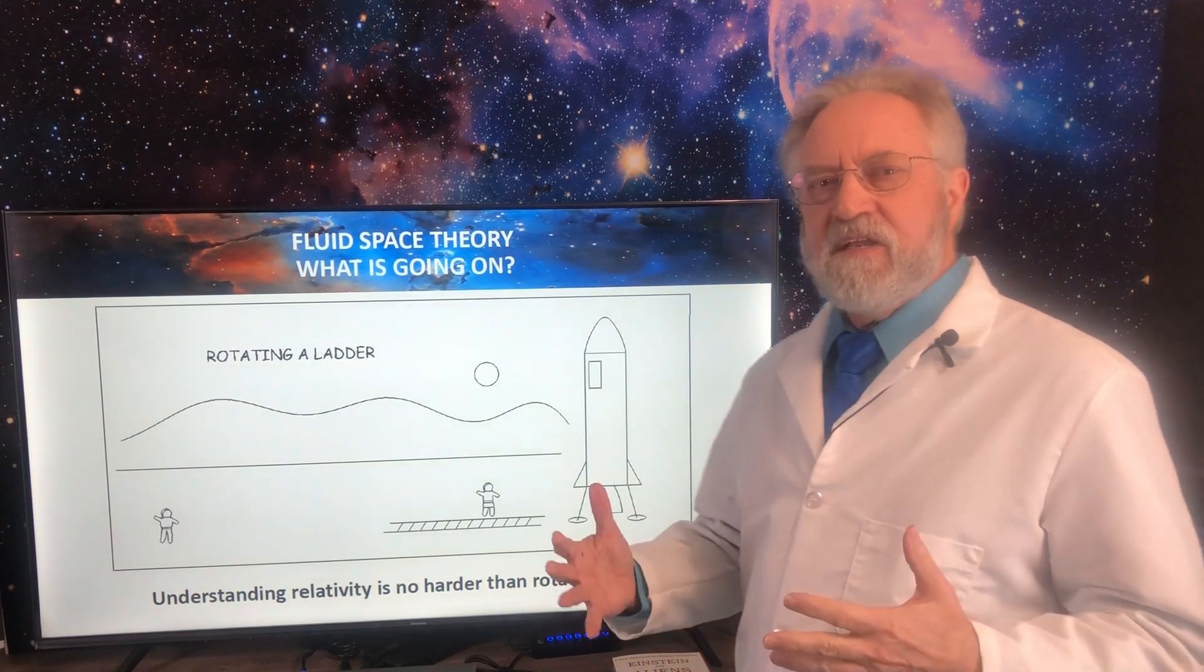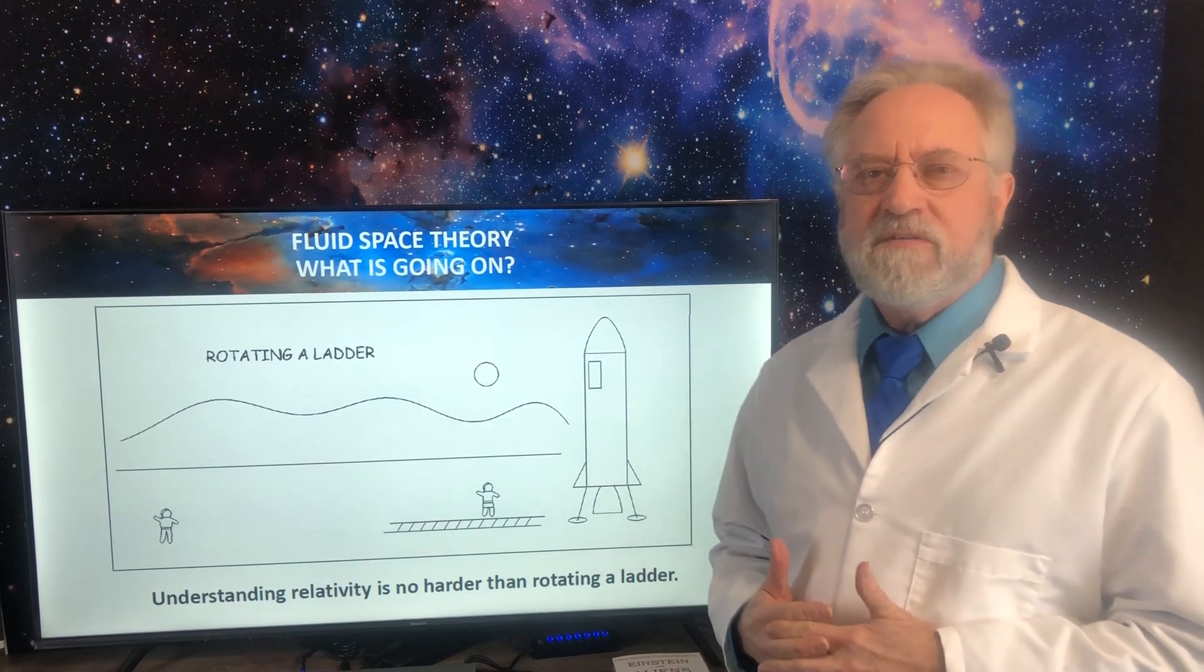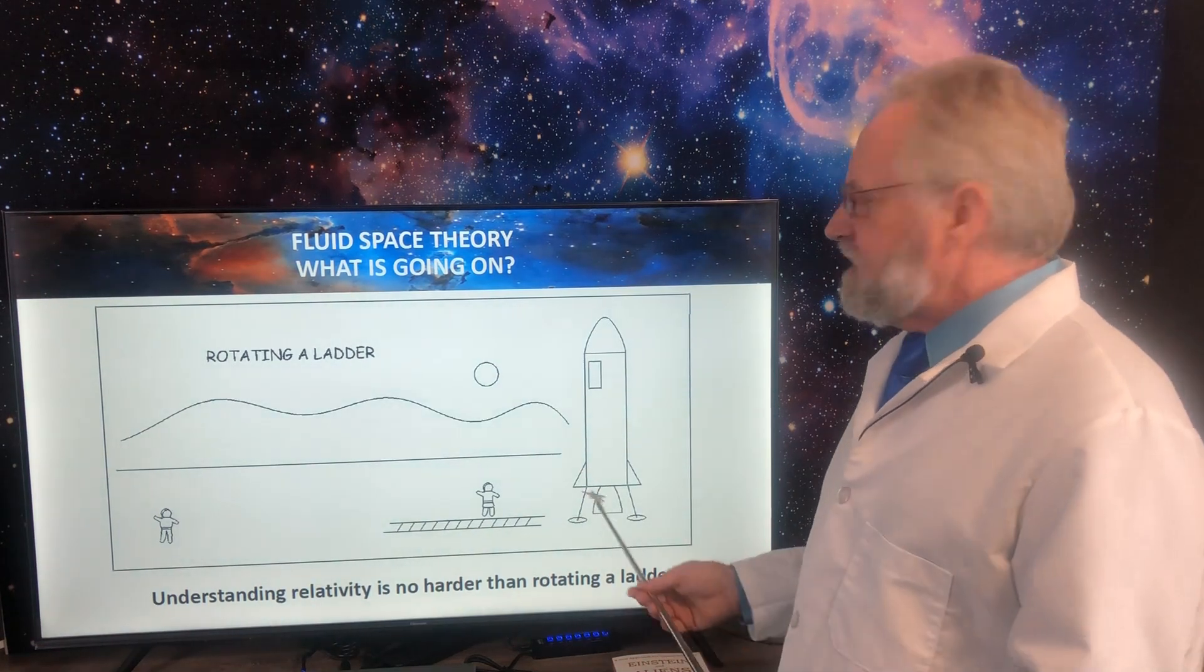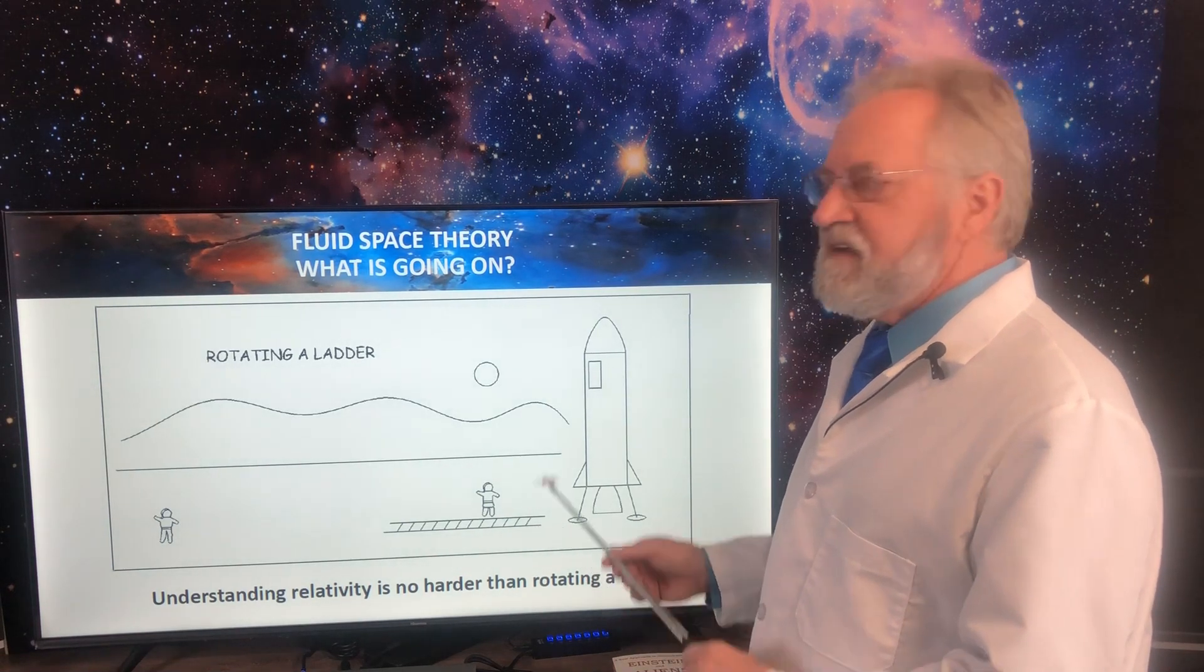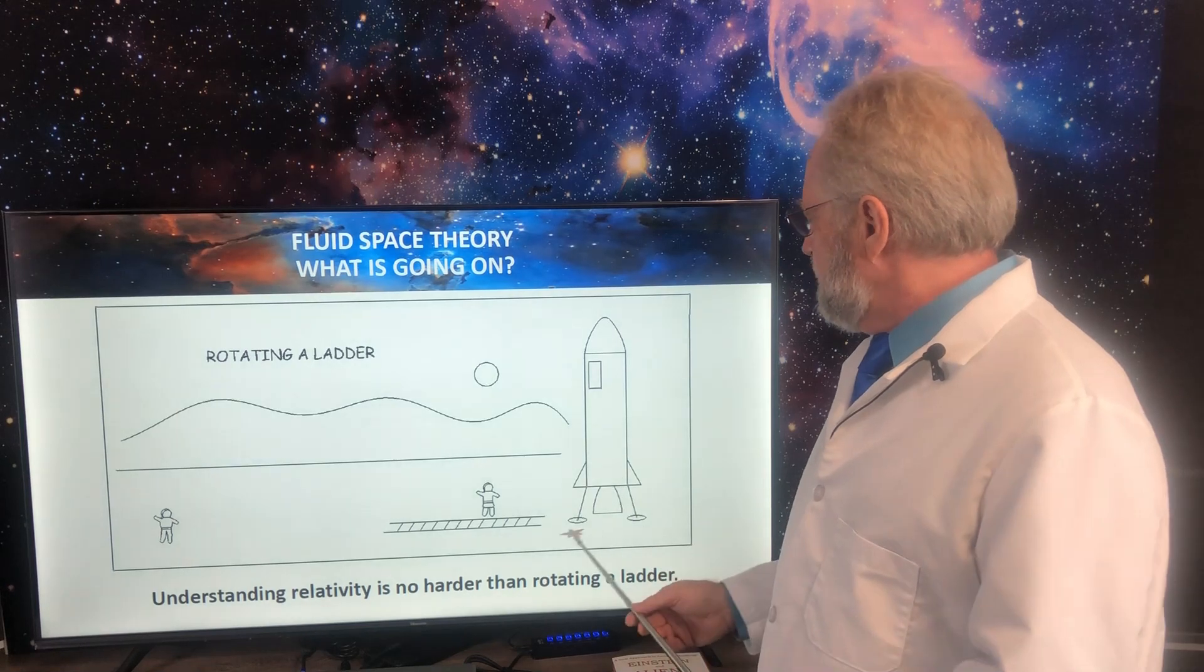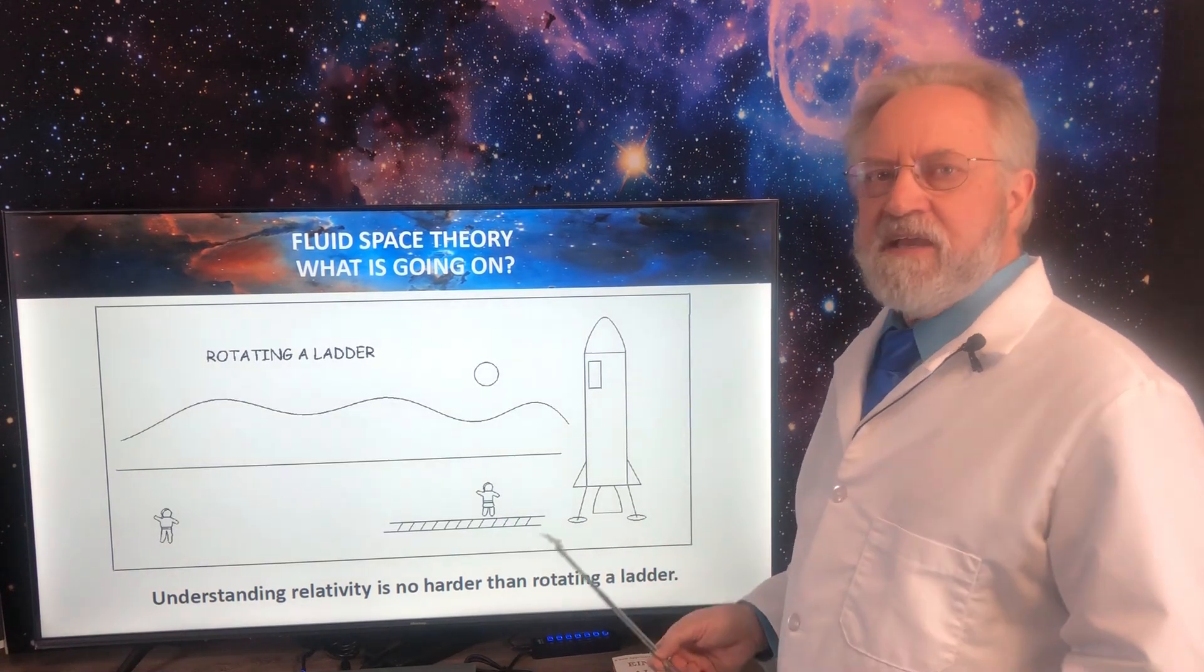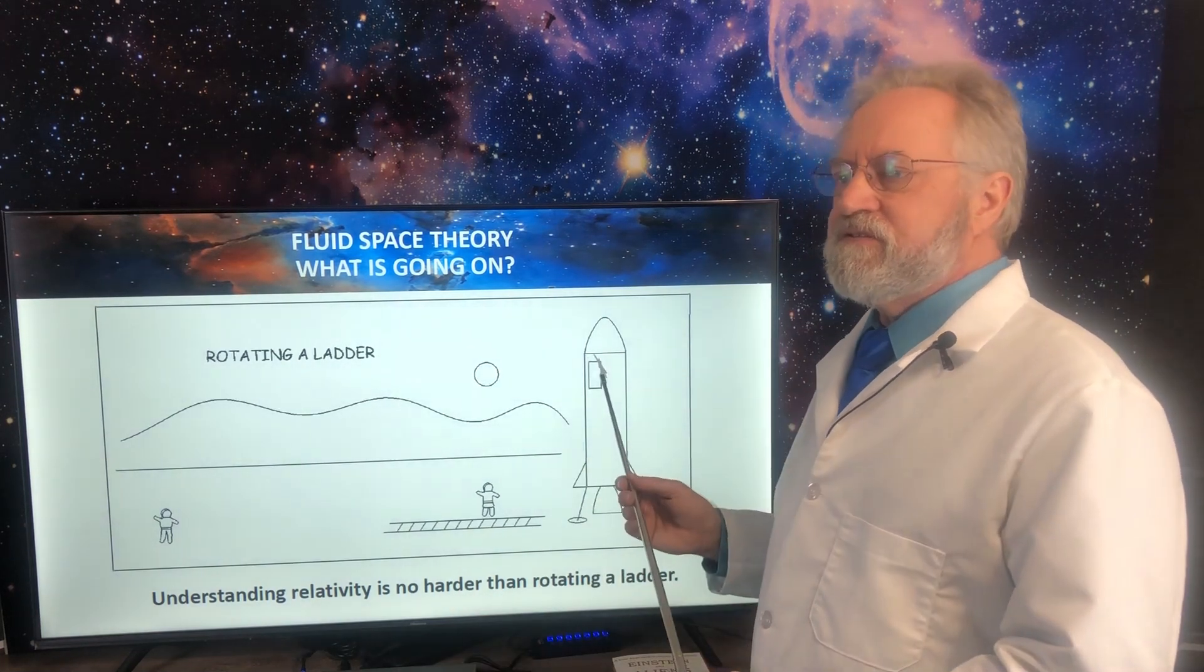So understanding space time and relativity is really no more difficult than rotating a ladder. Here we see Ricky and Stan exploring the surface of the planet they discovered. And the ladder has blown down. So Ricky knows that the ladder now does not have enough vertical length to reach the hatch. It's all horizontal. But she knows she can fix that by calling Stan over. And the both of them can rotate the ladder up against the hatch. And they are exchanging length in the horizontal direction for length in the vertical direction.